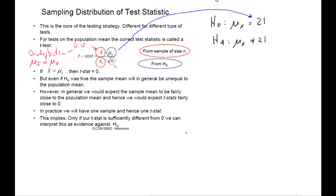The test statistic is: t = (x-bar minus mu x) divided by (s_x divided by square root n), where mu x comes from the null hypothesis — in our example, 21. s_x is the sample standard deviation and n is the sample size. If we get a sample mean of exactly 21, the numerator is zero, so the t-statistic would be zero — that would be evidence for H0.